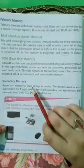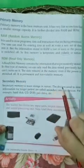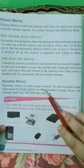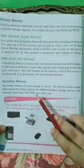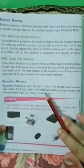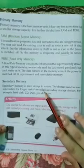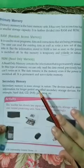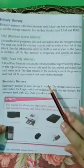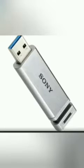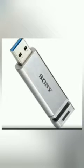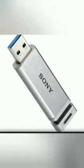Now, secondary memory. Secondary memory is mass storage in nature. The devices used to store information for a longer period are called secondary storage devices — for example, hard disk, CD, DVD, pen drive, etc. Secondary memory stores the data permanently for future use and is the storage space available outside the CPU. These secondary storage devices also help in transferring data from one computer to another.